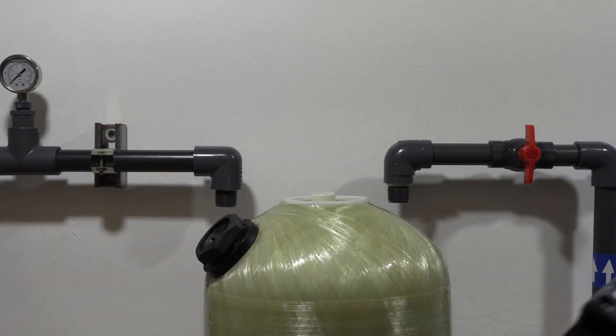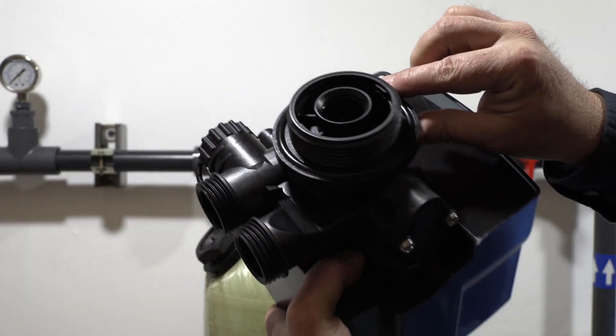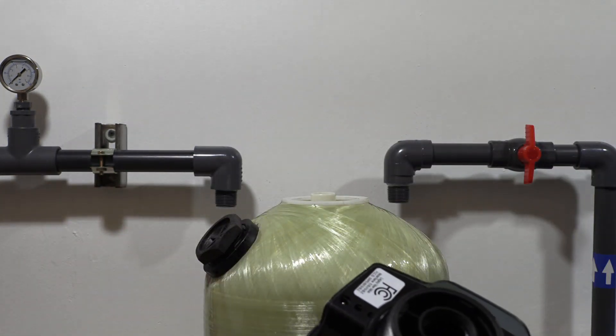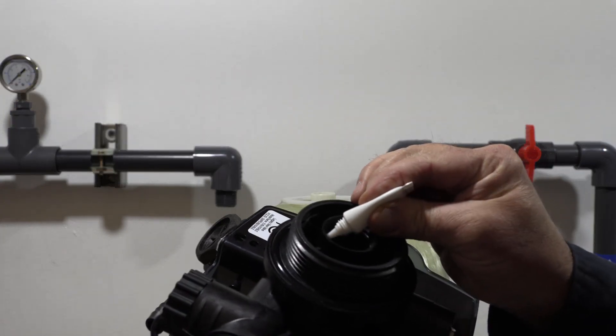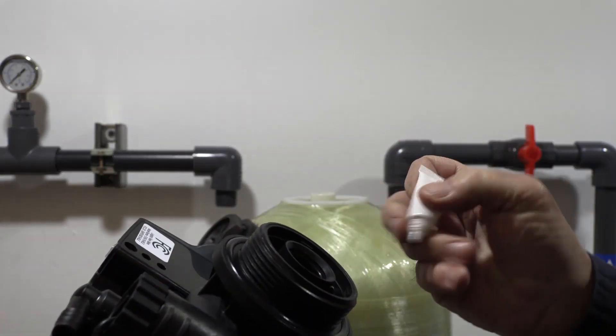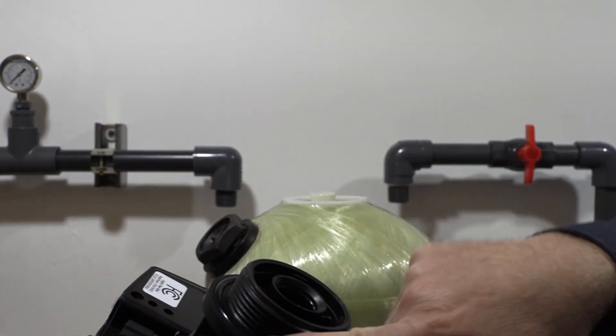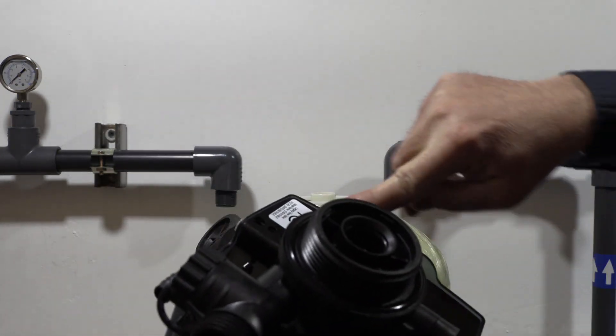There are two O-rings that you're going to want to lube here. This one seals to the tank, and there's one inside that seals to the D-tube. So we'll put a little of that lube we supplied around those O-rings. Get those good and lubed up.